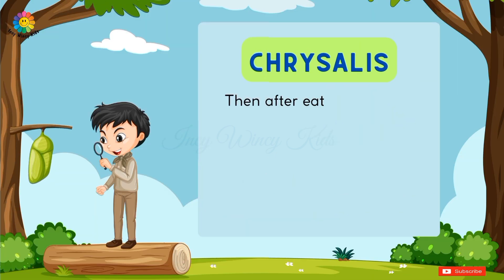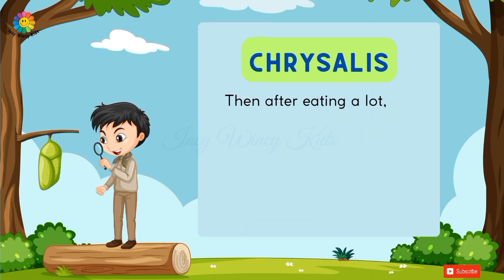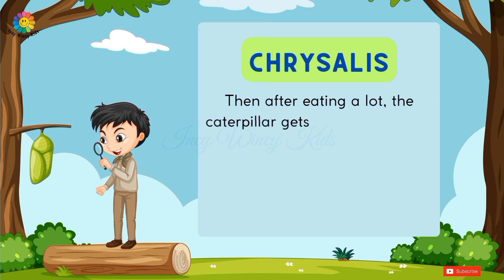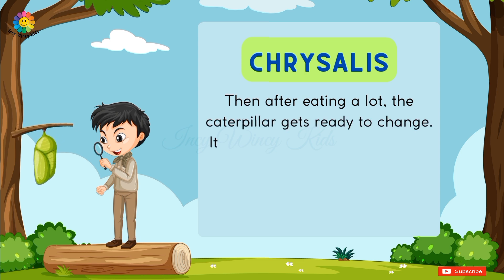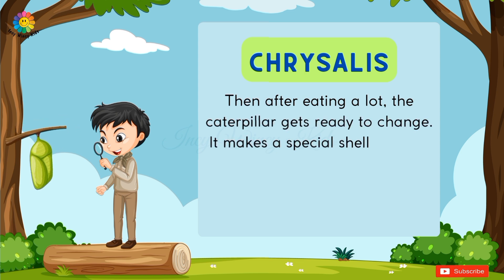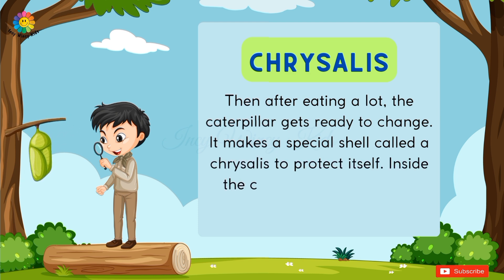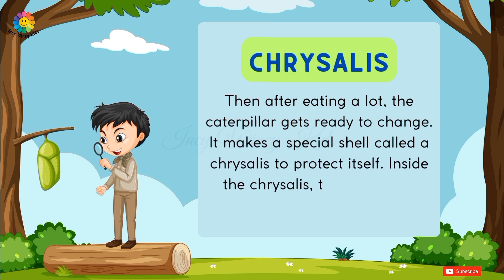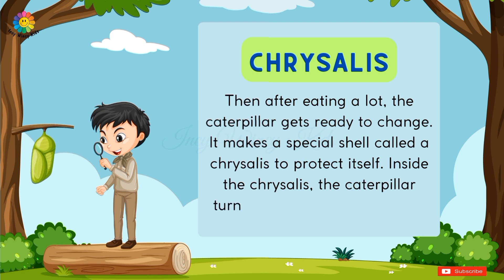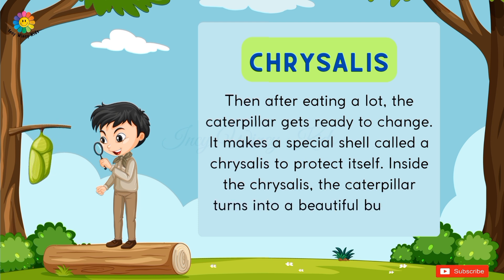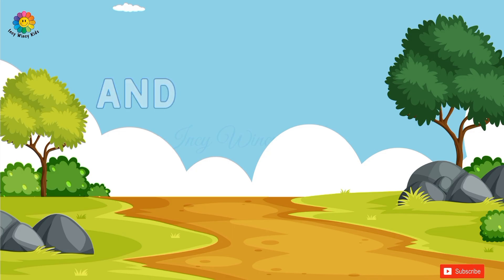The next stage is chrysalis. After eating a lot, the caterpillar gets ready to change. It makes a special shell called a chrysalis to protect itself. Inside the chrysalis, the caterpillar turns into a beautiful butterfly.